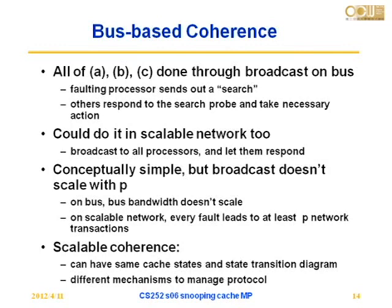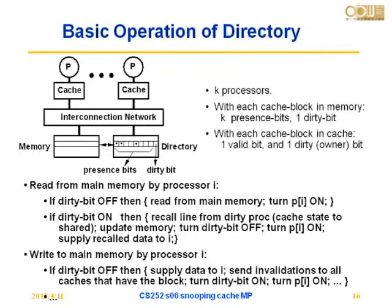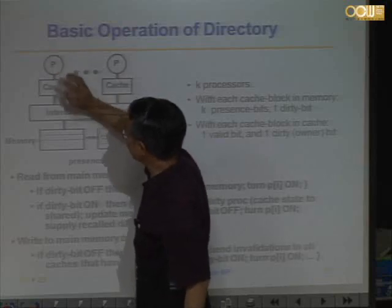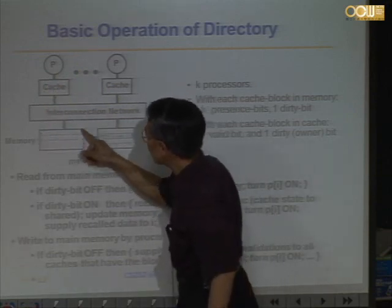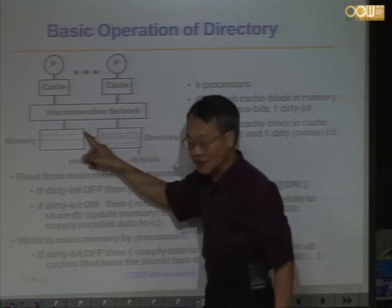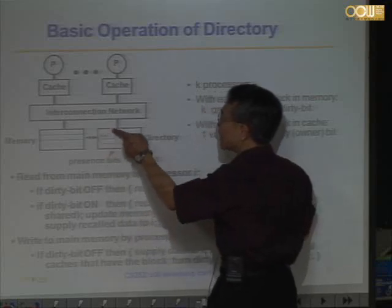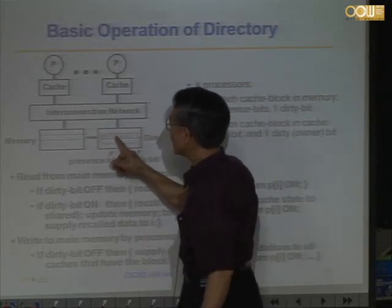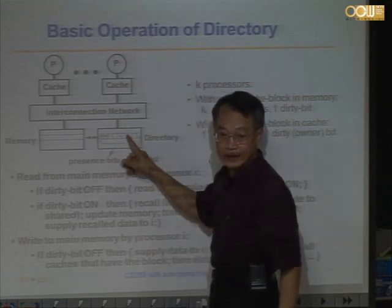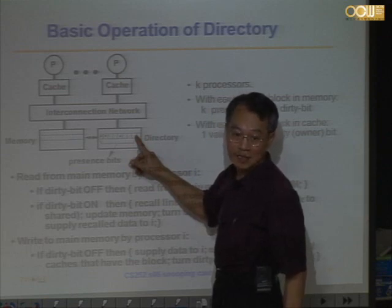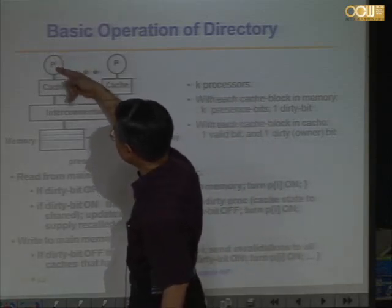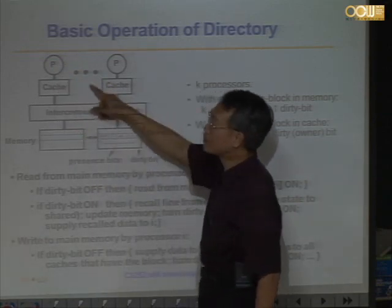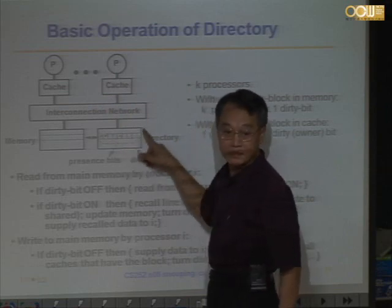For scalable coherence, let's look at a figure directly. This is a processor, this is a cache. For the memory, for every cache-block-sized memory block, I need to have a directory entry saying who has this copy and who is the owner. Whenever I want to write, my write goes to the memory, and the memory knows which ones to invalidate based on this table. Sometimes the cache can also keep the coherent state of its cache lines, so it knows whether it needs to communicate with the memory.